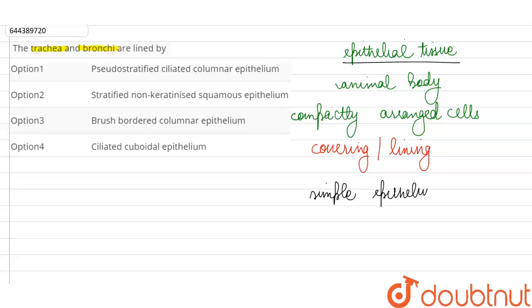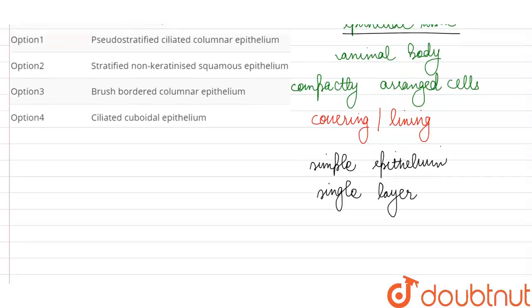On the basis of the cells which are making up the simple epithelium, on the basis of their shape and structure, we have many different types of simple epithelial tissue also.